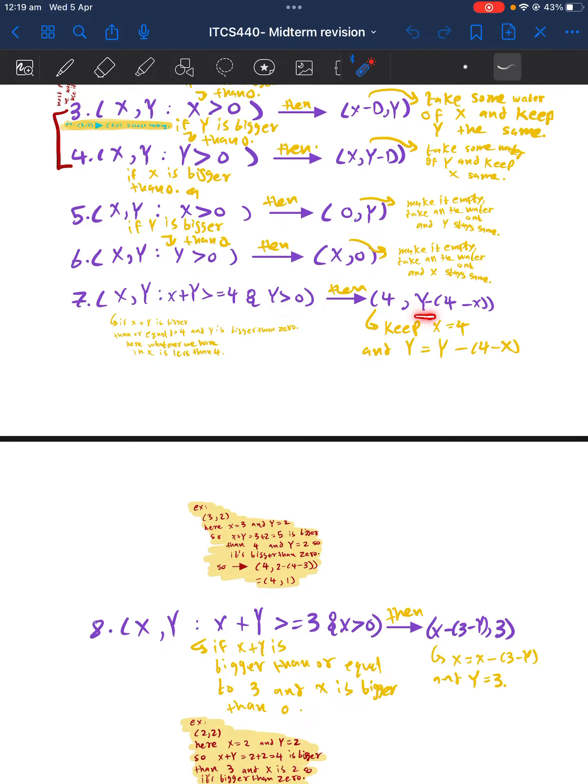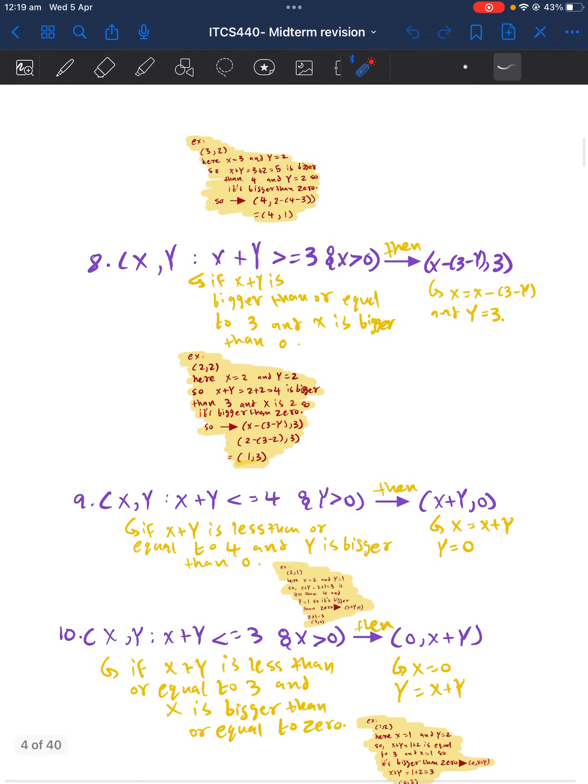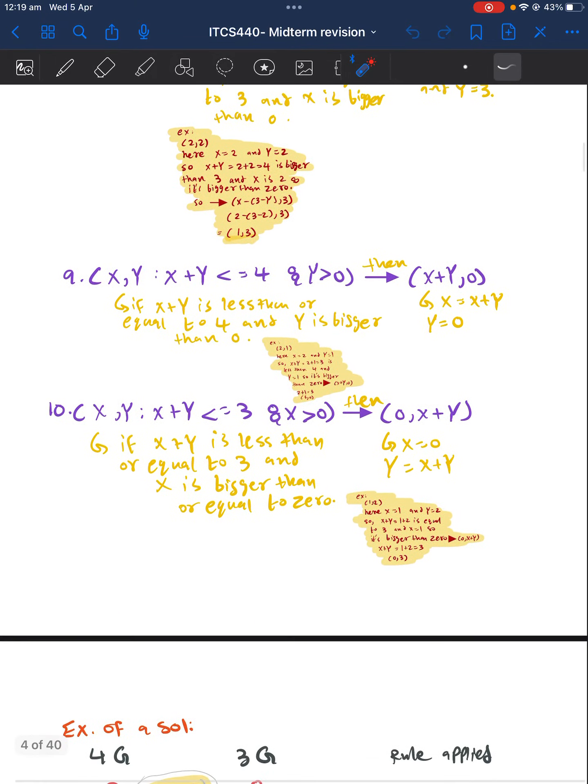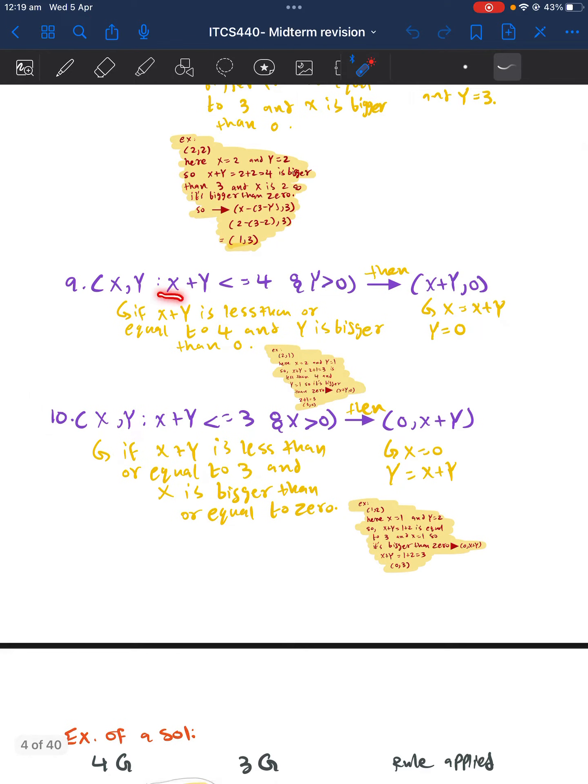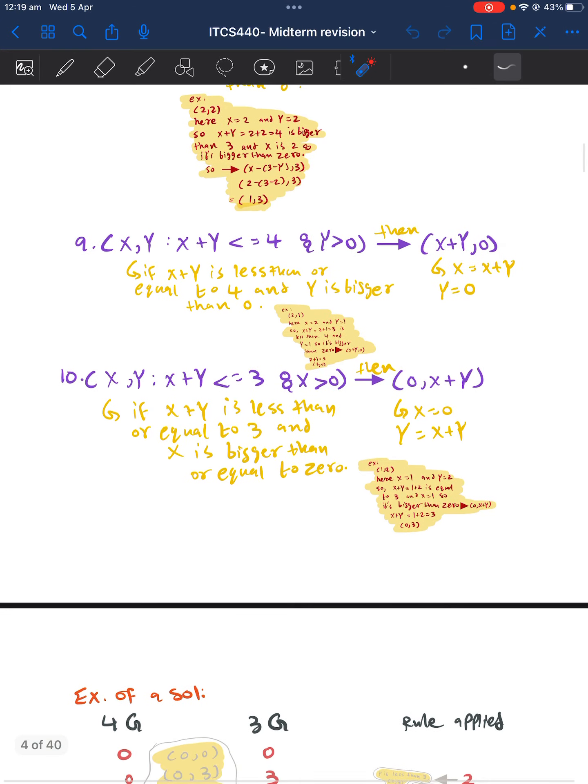We will do the same thing for the Y but with three, because the second one can hold up to three gallons of water. So for rule number nine and ten, we will just have X plus Y. If it is less than or equal to four and Y is bigger than zero, we will have X plus Y and zero for the second one, and the same thing for...